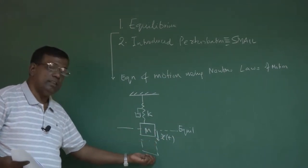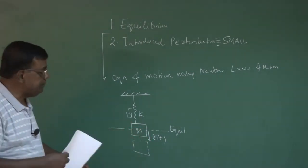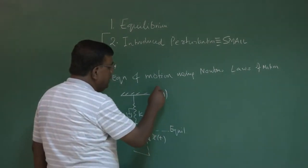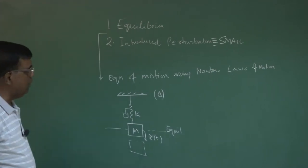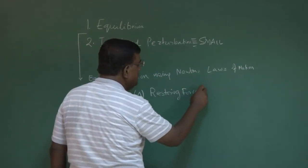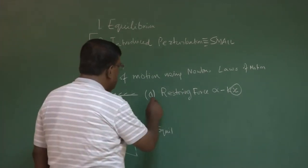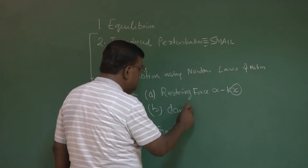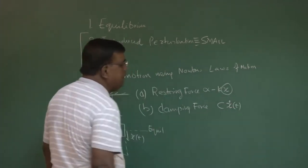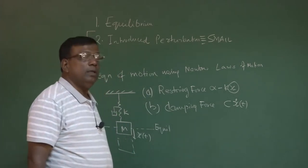Because of this disturbance, x has been created and then we release it and try to see what is happening to this x. Once I draw the mass-spring-damper system, there are salient points to be noticed: one is there is a restoring force which is typically kx, where x is the perturbed variable. Also, there is a damping force which is cx-dot, proportional to the rate of change of the perturbed quantity x. We have assumed linear damping.